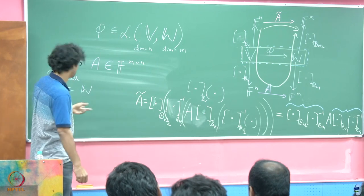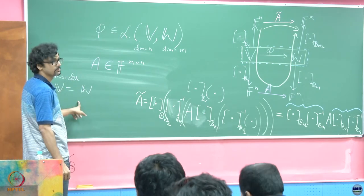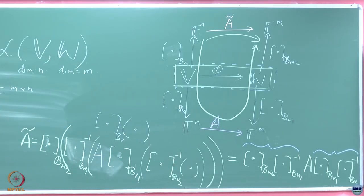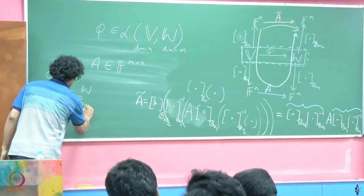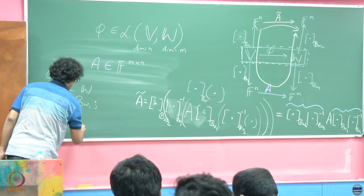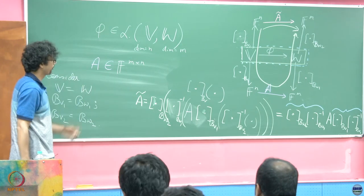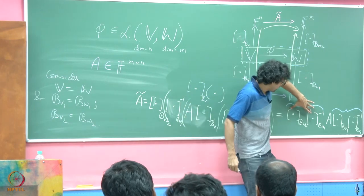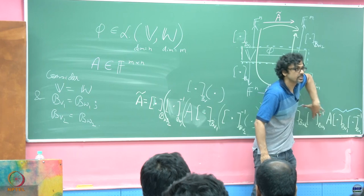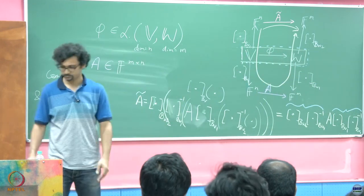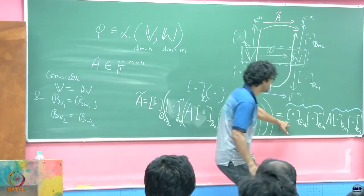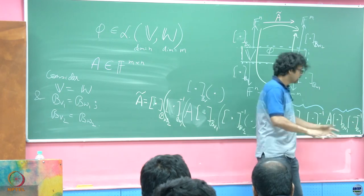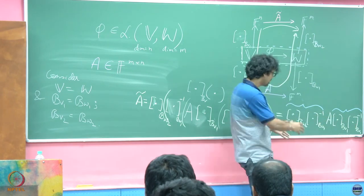Now if you stretch your imagination slightly and consider V equal to W — in other words, phi becomes what we call an endomorphism, a mapping from V to itself — and furthermore BV1 equals BW1 and BV2 equals BW2, then can you not say that the objects on each side are actually inverses of one another? First, observe that these are matrices.